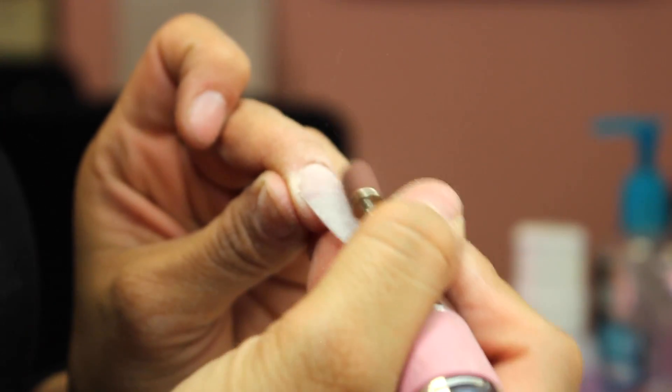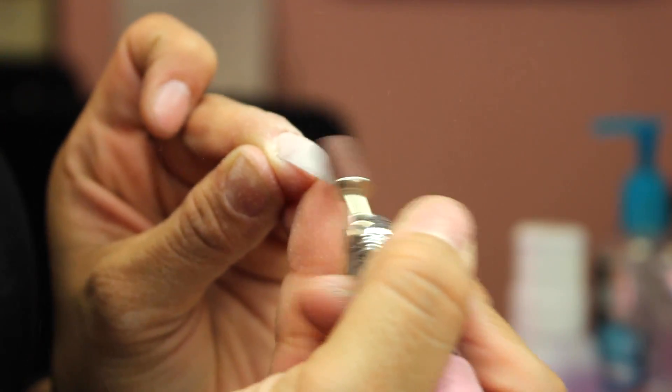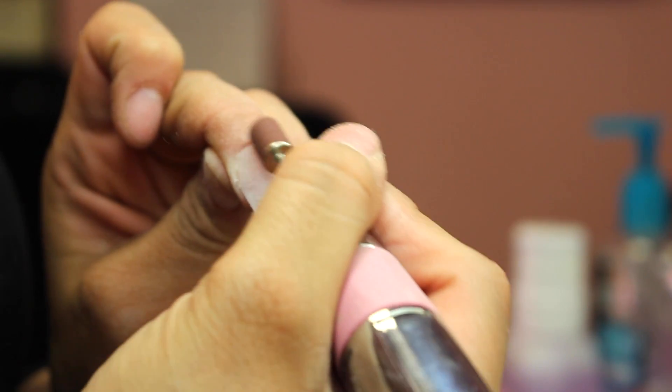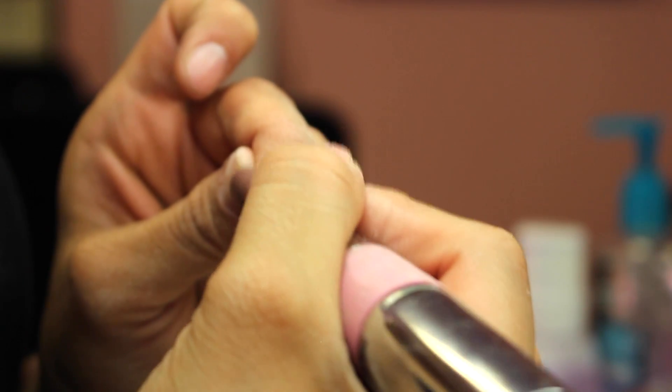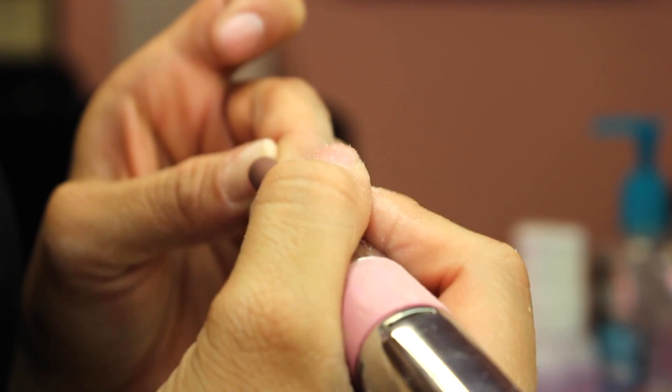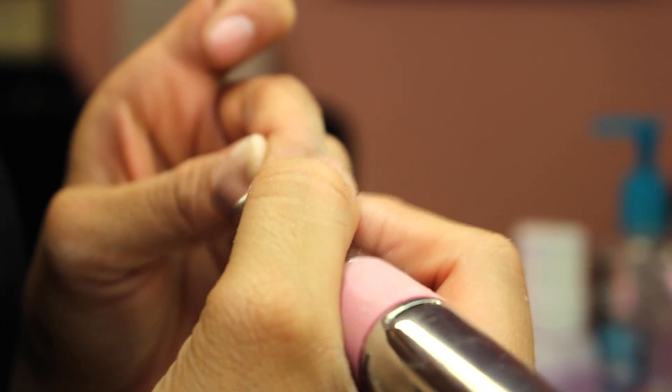You just really want to be careful. Turn your finger around, look up and down, make sure your apex is good and thick enough, and just keep on filing. Don't over-file because then you have to add more acrylic, which you don't want to do at this point.